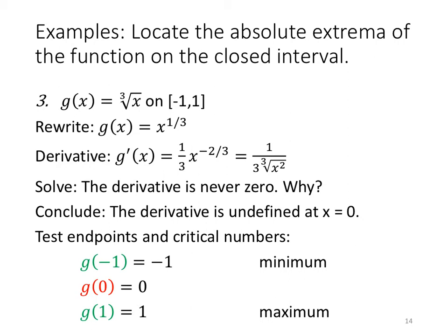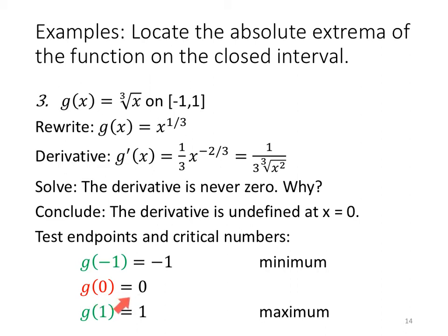g(x) = ∛x = x^(1/3) on the interval [−1, 1]. The derivative is g'(x) = (1/3)x^(−2/3), rewritten with a positive exponent in radical form as 1/(3∛(x²)). This derivative is never zero — setting a rational expression equal to zero means the numerator equals zero, but the numerator is 1, which is never zero. However, the derivative is undefined at x = 0. So checking g(−1) = −1, g(0) = 0 (the critical number), and g(1) = 1: the smallest is −1, the largest is 1. So the minimum is at (−1, −1) and the maximum is at (1, 1). At g(0), something important happens because the derivative is undefined, but it's neither a maximum nor a minimum.